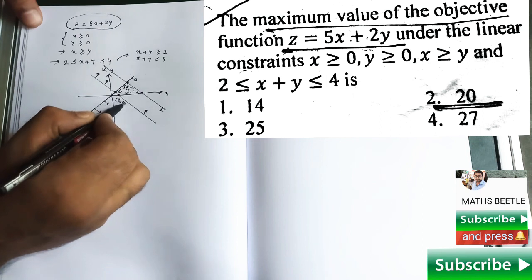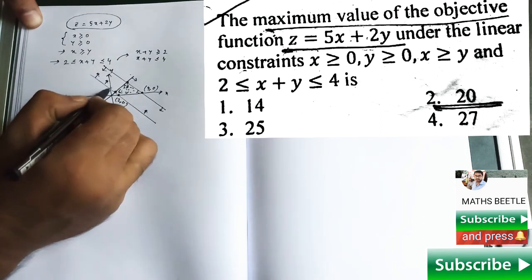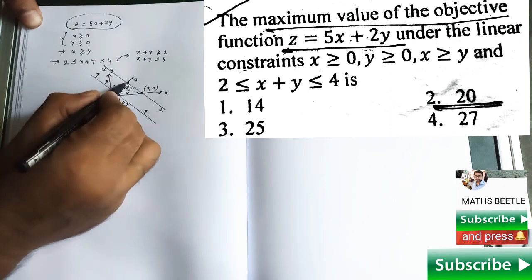So this point is 2, 0. This point is going to be 4, 0. This point, you just calculate and it will be 1, 1, and this is 2, 2.